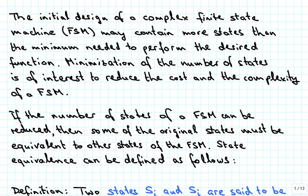A finite state machine with just a few states is relatively easy to design such that the number of states is minimized, but once a finite state machine becomes more complex it is not so obvious how to find the minimum number of states needed. The minimization of the number of states is of interest because fewer states will reduce the cost and the complexity of a finite state machine.